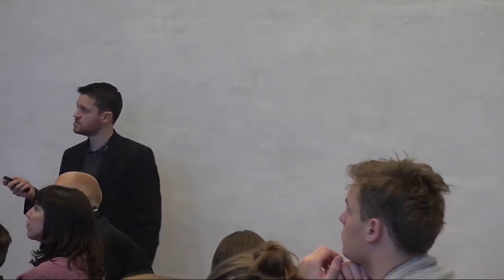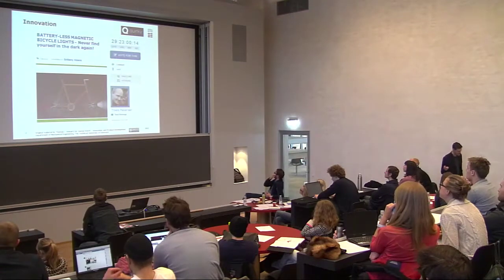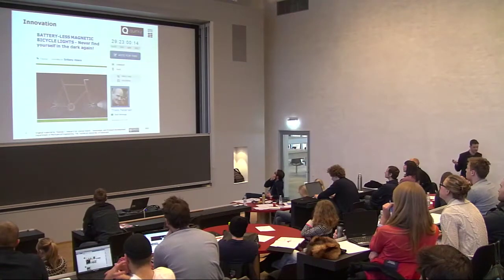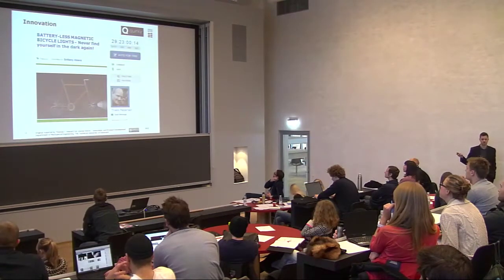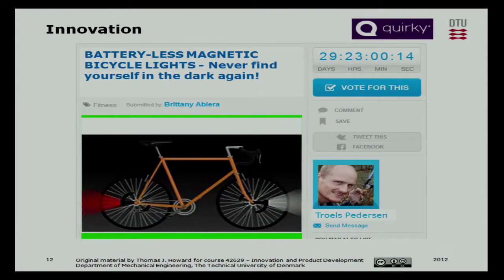So again, Charles now has his funding and wants to develop his magnetic bike light. He can put an advert on Quirky and have a vote. He has 29 days to receive the critical number of votes, and if he gets that, the project will go live.